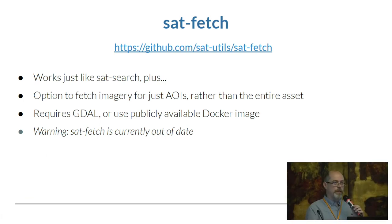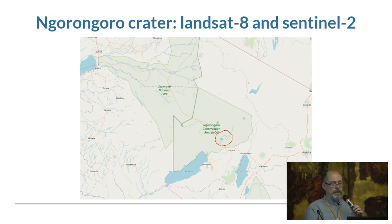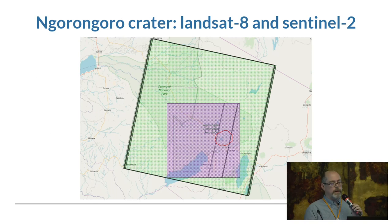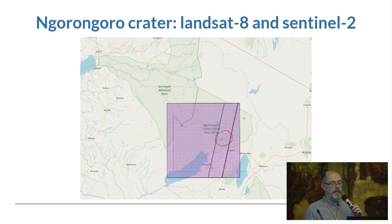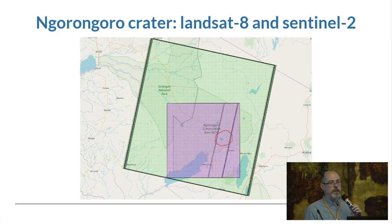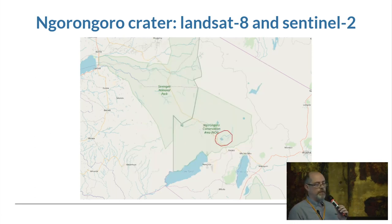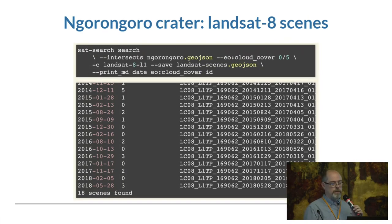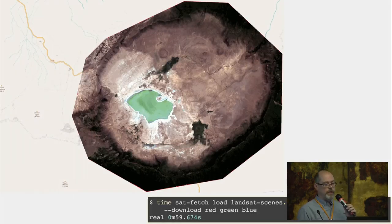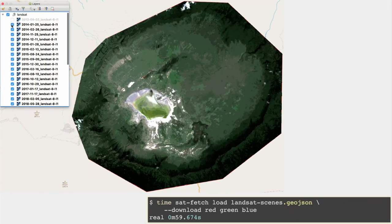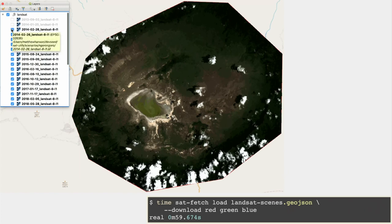SAT Fetch is built on top of SAT Search, requires GDAL, and essentially does clip-and-ship and stacking of bands. You take the results from SAT Search and download just the area you want. Here we have Ngorongoro Crater in Tanzania — we have the footprint of a Sentinel scene and a Landsat scene. We searched for all 18 Landsat scenes. If you downloaded them from the Landsat Earth Data Search GUI they'd be a gigabyte apiece, totaling 18 gigabytes. But here we can fetch just the region we want in less than a minute.